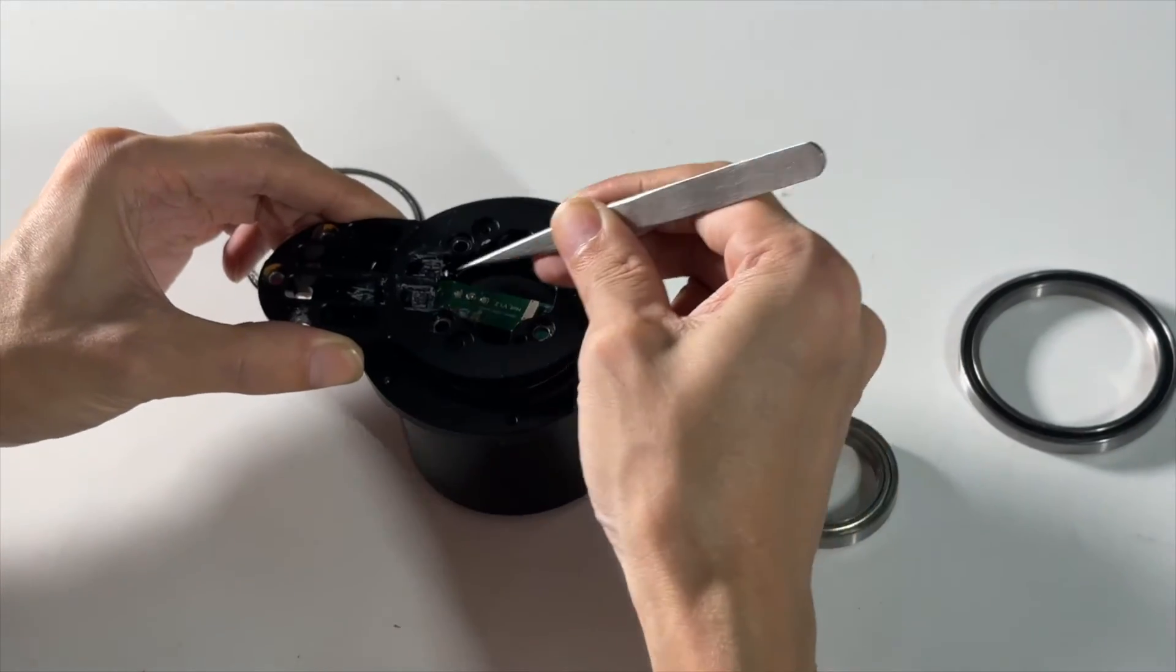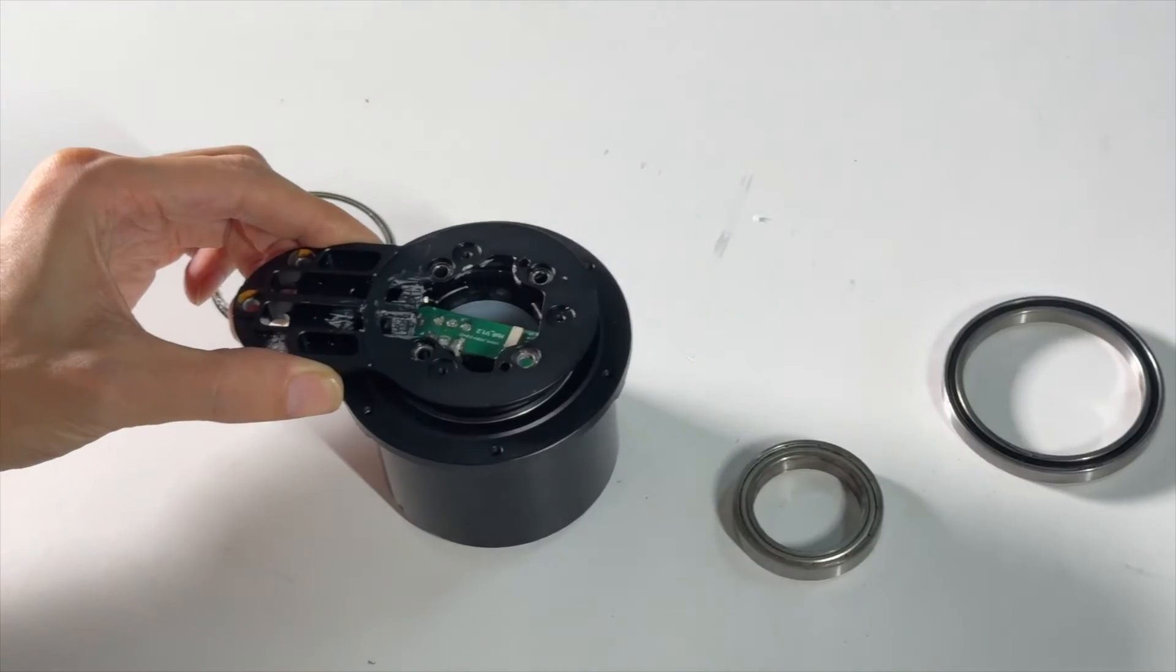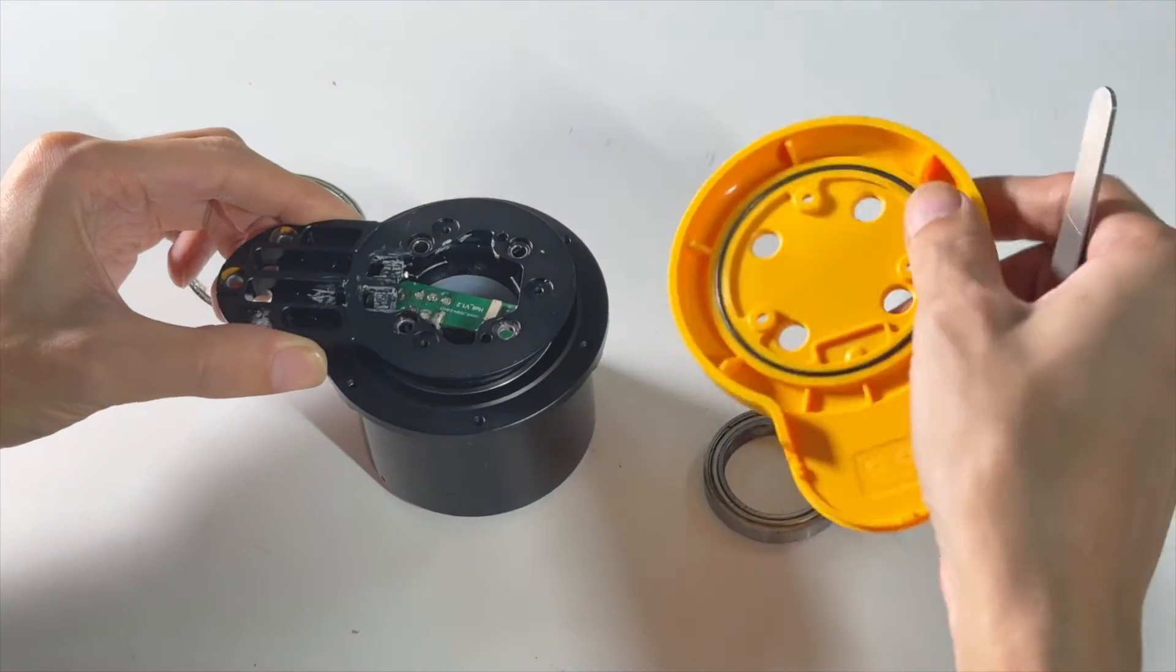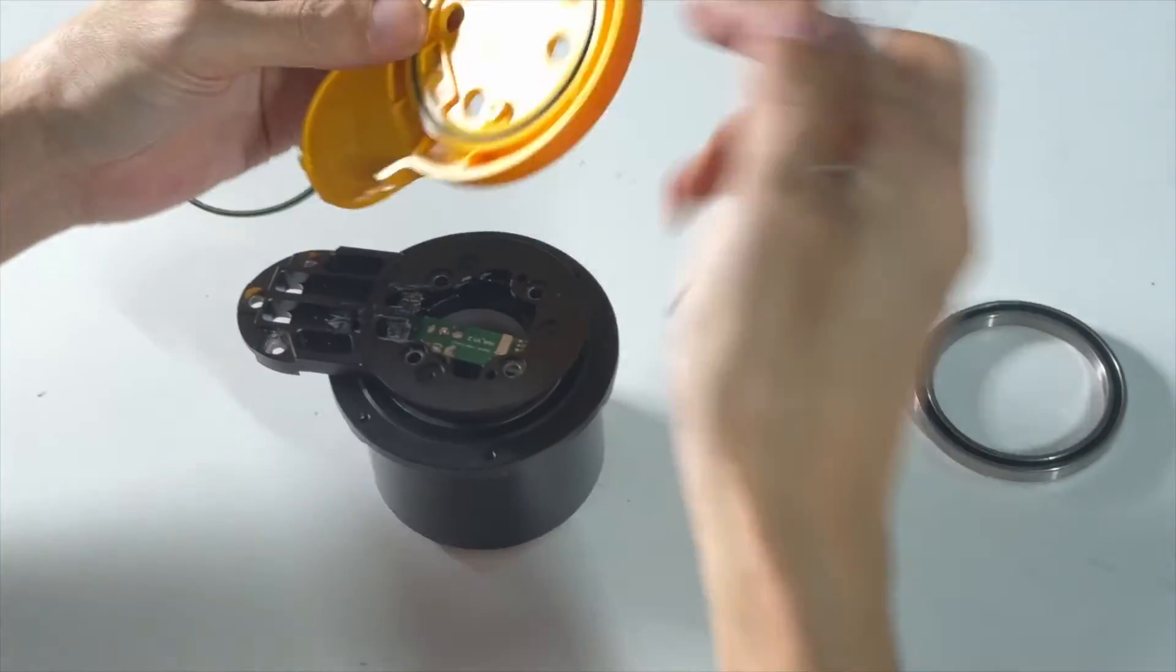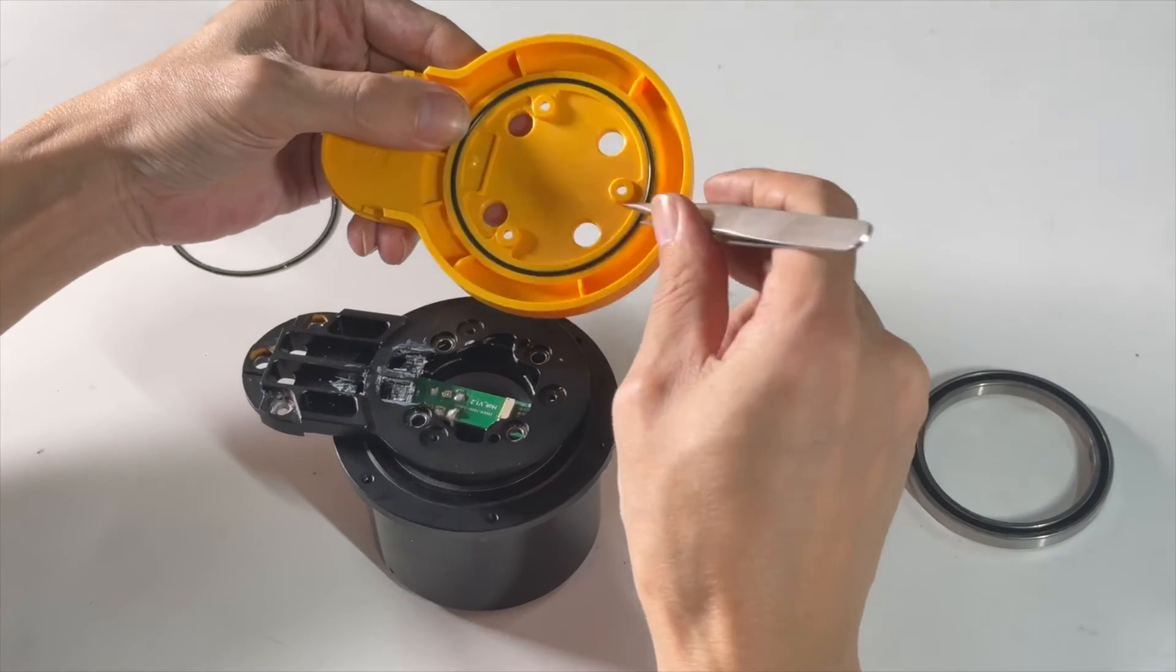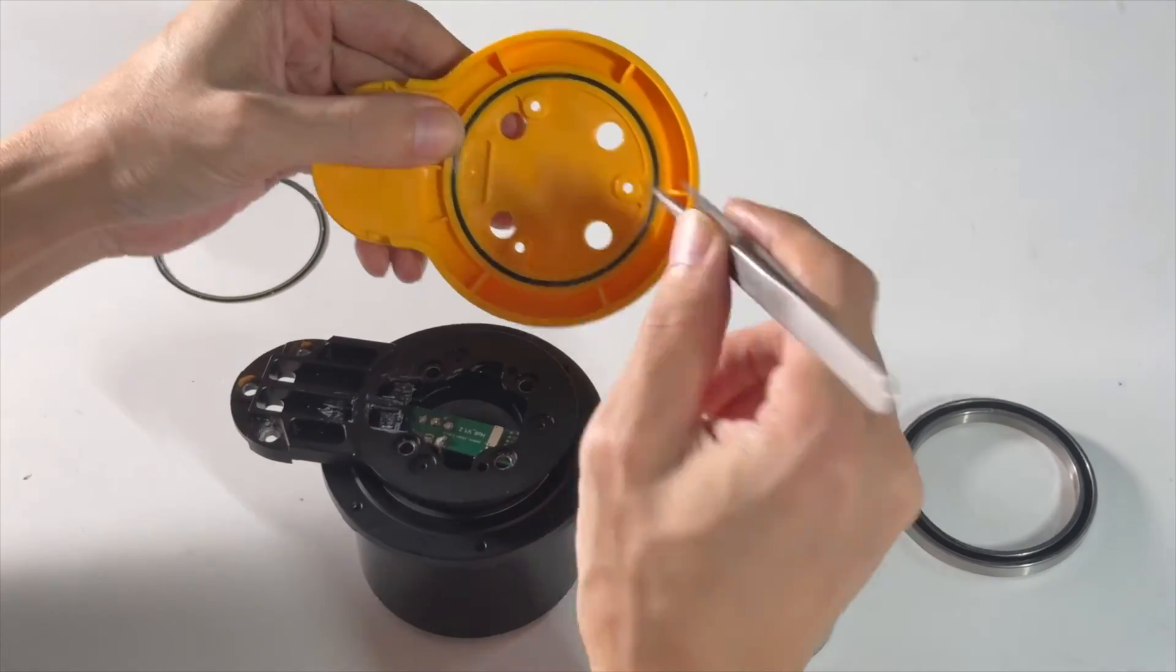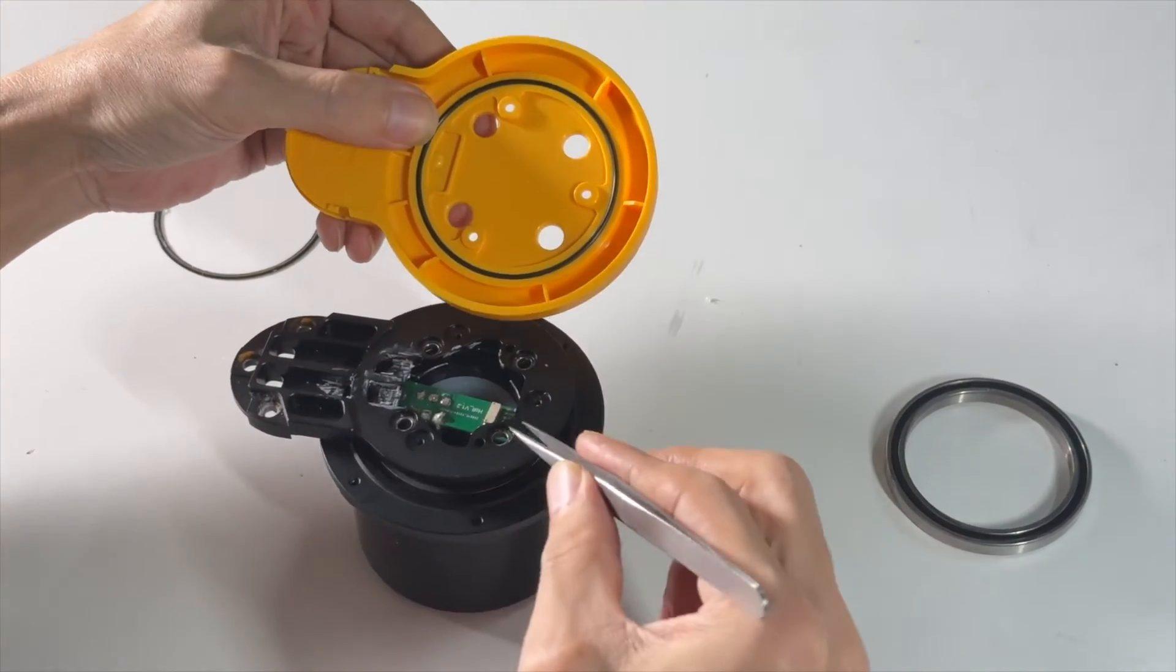There is still a possibility of water ingress and dust ingress in the middle part. Therefore, there's also a waterproof and dustproof sealing ring on this cover, which can tightly fit it with the support to achieve waterproof and dustproof performance.